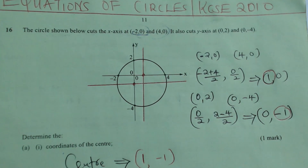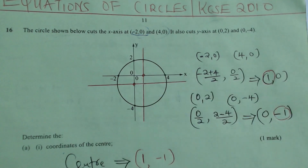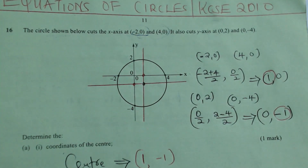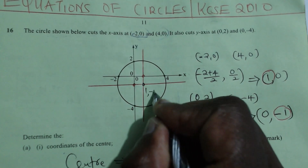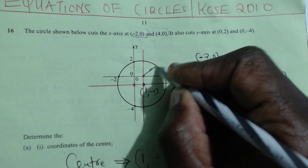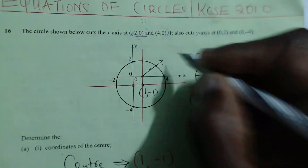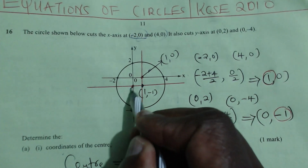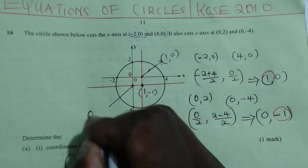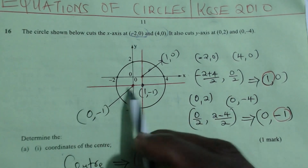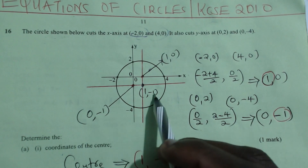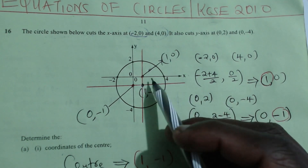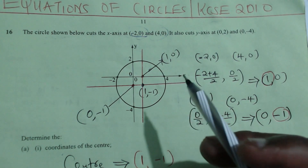Now we have both coordinates. From the x-axis chord midpoint we got 1, 0, giving us the x-coordinate of the center as 1. From the y-axis chord midpoint we got 0, negative 1, giving us the y-coordinate as negative 1. Therefore, the center of the circle is at (1, negative 1).